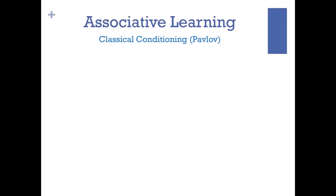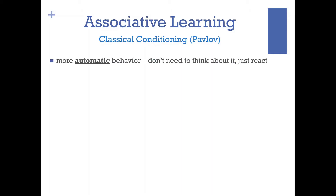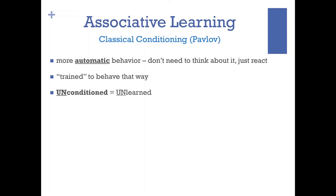Associative learning is the unintentional or accidental association of two unrelated things. It is not motivated by cause and effect or by rewards — it is automatic. The pairing of two things that really don't have any natural or genetic explanation for one another; they just become associated so that you begin to anticipate an outcome. It's a trained behavior. Anytime you see a U, it stands for unconditioned, meaning unlearned — part of your genetic instinctive makeup. Conditioned means learned, something built with experience over time.